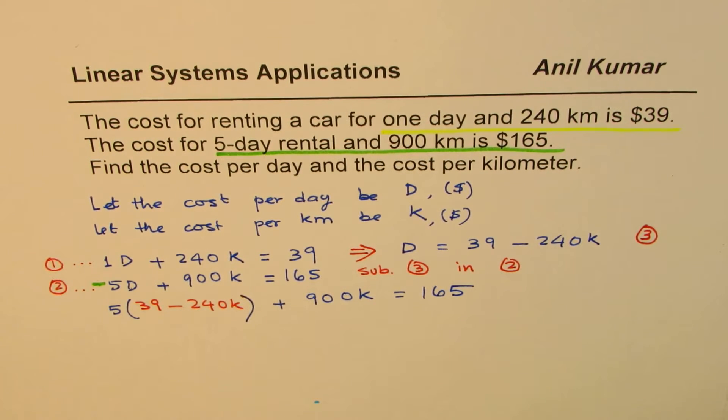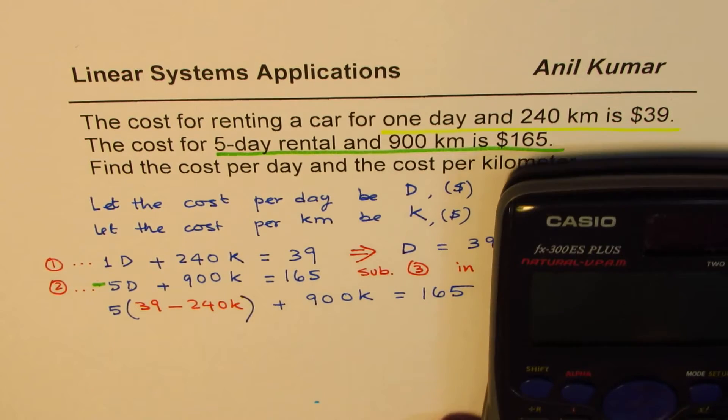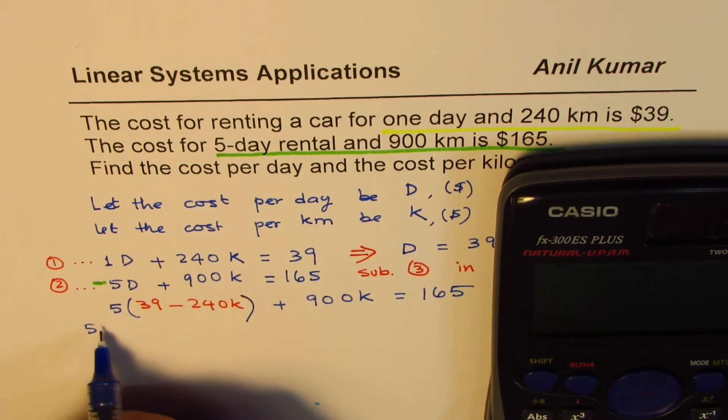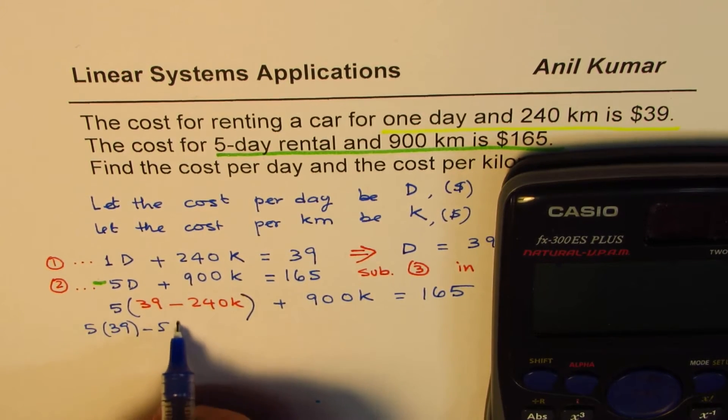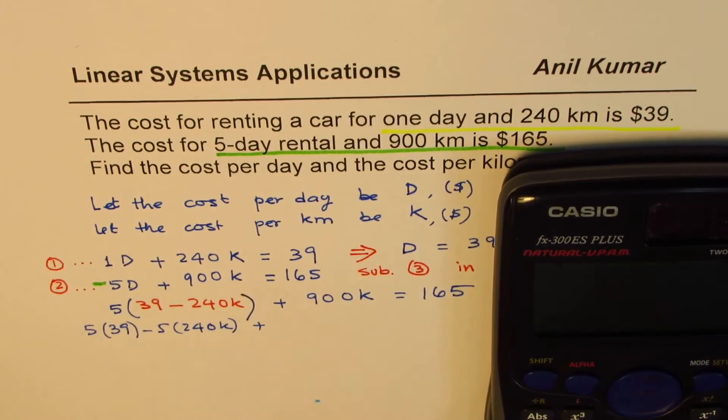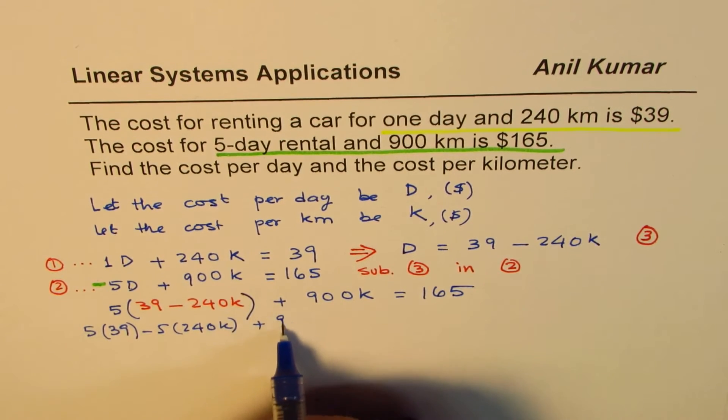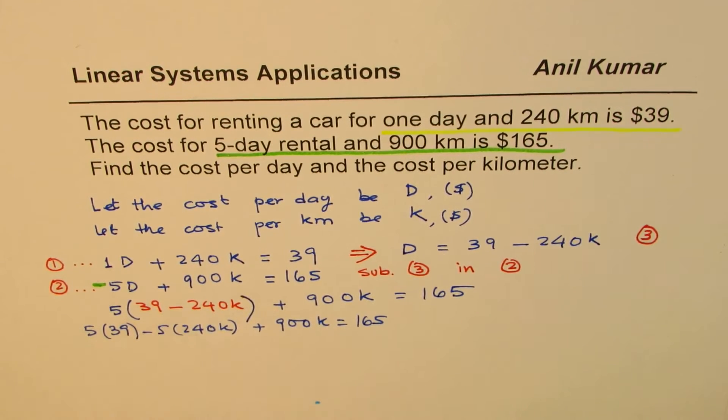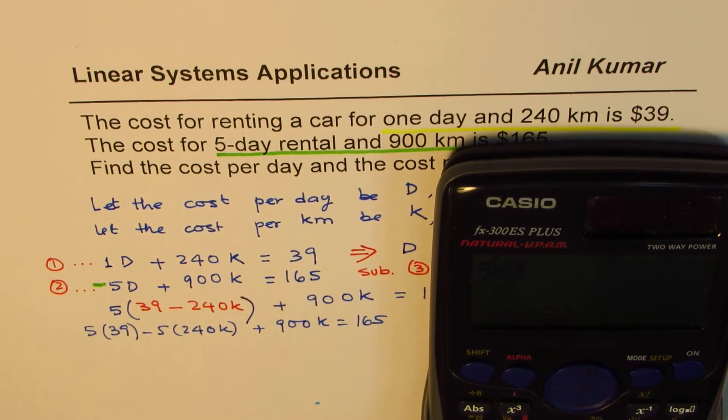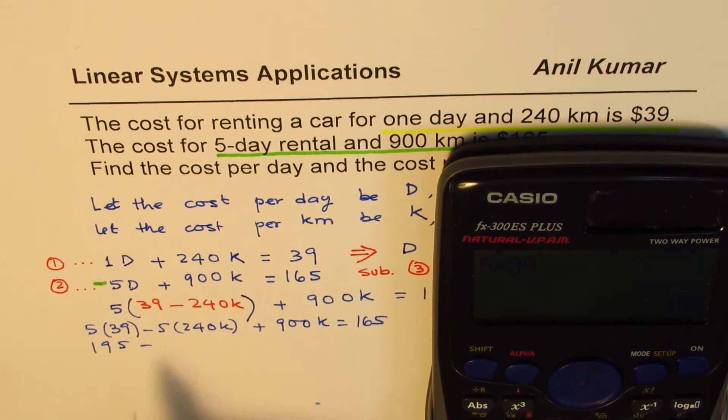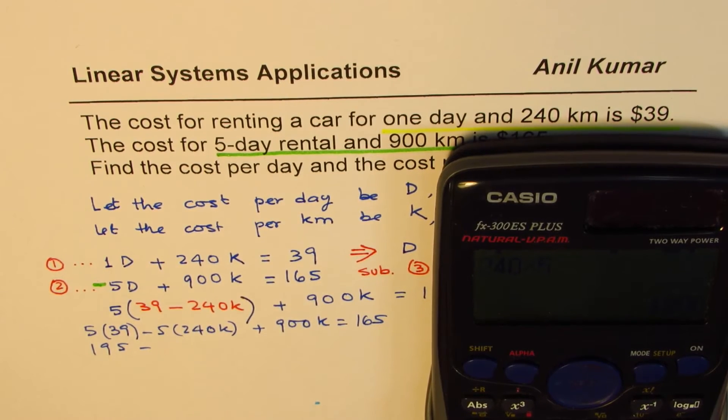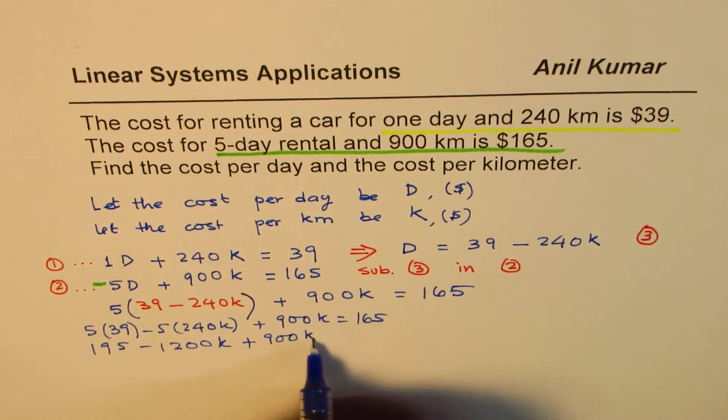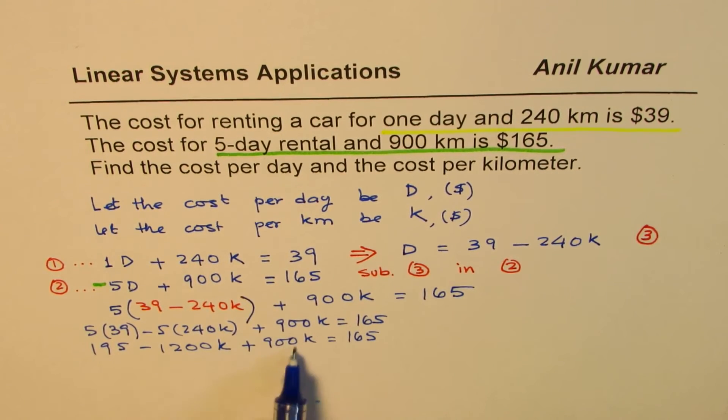Now, what we have is an equation which has only one variable. Now we can actually calculate what K is. Let's open this bracket, applying distributed property. I'll multiply five by 39, then minus five times 240K, and then rest of the things. We have applied distributed property here. So we have five times 39, which is equals to 195. 195 minus 240 times 5, 1200K plus 900K equals to 165. Now we can combine these Ks and the variables.